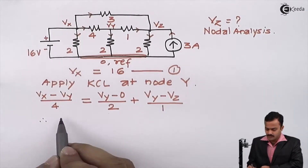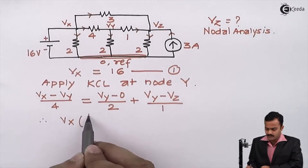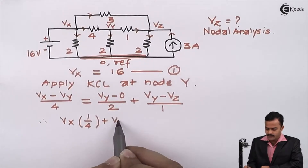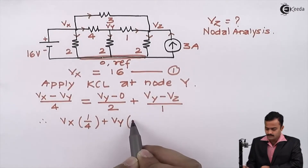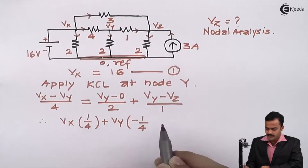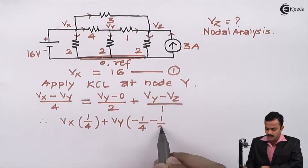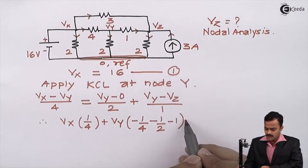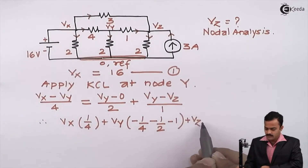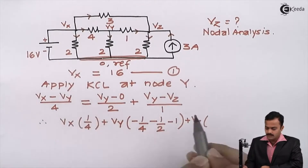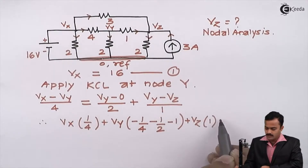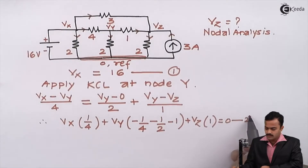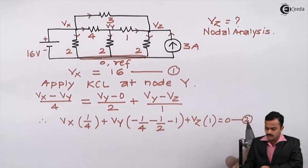Rearranging the terms — grouping all Vx terms together, then all Vy terms — I get Vx times (1/4), Vy times (−1/4 − 1/2 − 1), and Vz with a coefficient of 1, equal to 0. This is equation number 2.